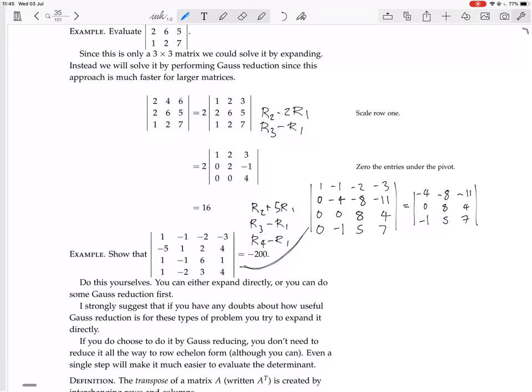Let's take row 1 and subtract 4 times row 3 from row 1. That won't change the determinant. But we will end up with row 1 becoming 0, then minus 8 minus 20, which is minus 28, and minus 11 minus 28, which is minus 39. And then we have 0, 8, 4. And then we have minus 1, 5, 7.